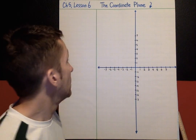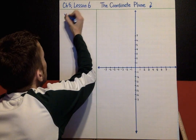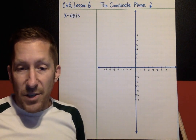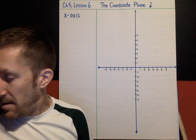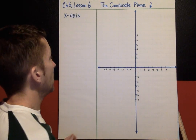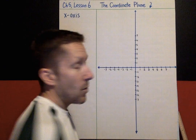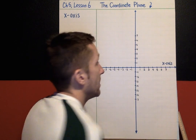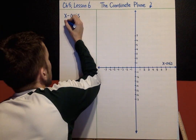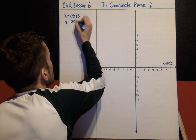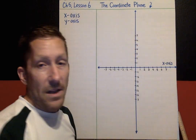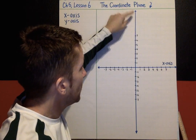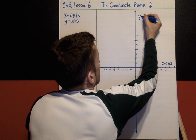The first vocabulary word is the x-axis. You might know which one is the x-axis, but we're going to label it so you know for sure. This is the x-axis — the horizontal number line. I'm going to put the x-axis right there. Next vocabulary word is the y-axis. The vertical number line is known as the y-axis.